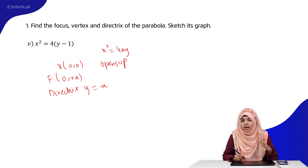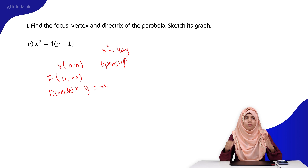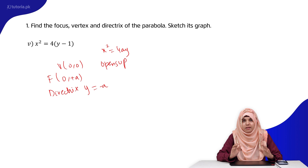The equation is x squared equal to 4y. Comparing to the general form of parabola equations, we have four cases. We have determined this case: x squared is equal to 4Ay. This parabola opens up.